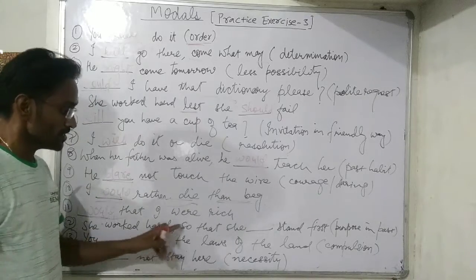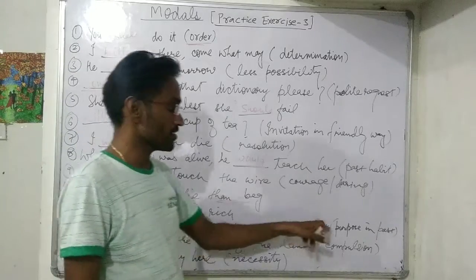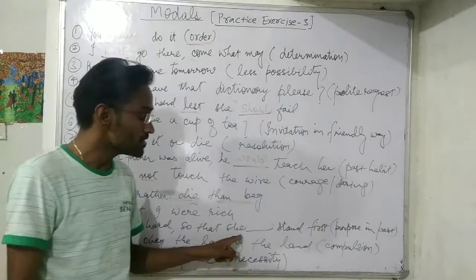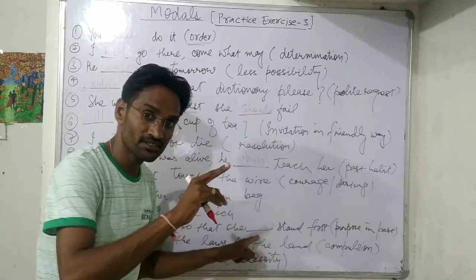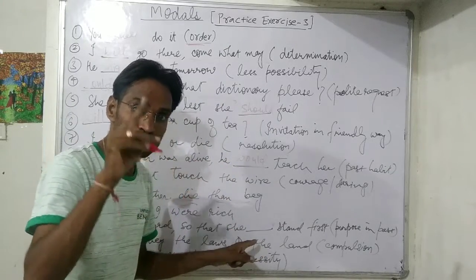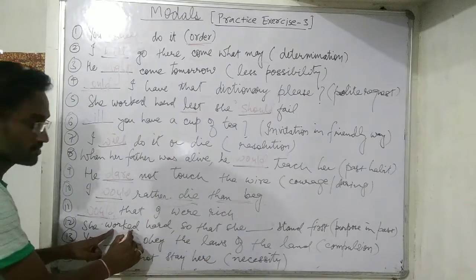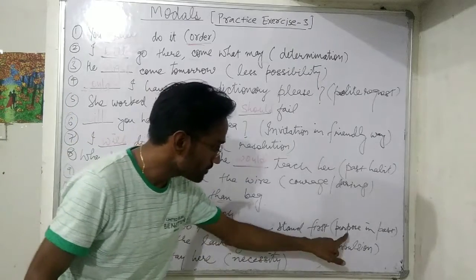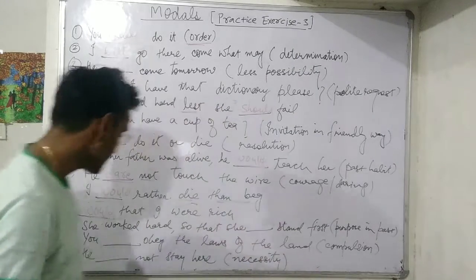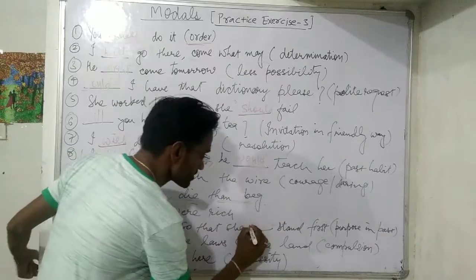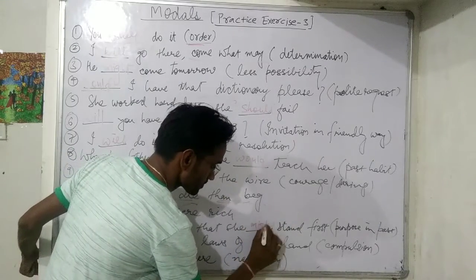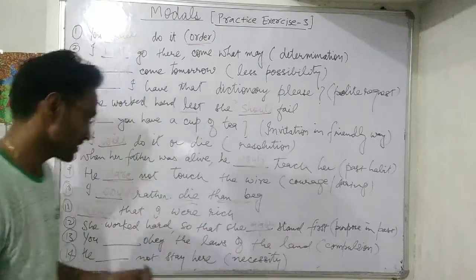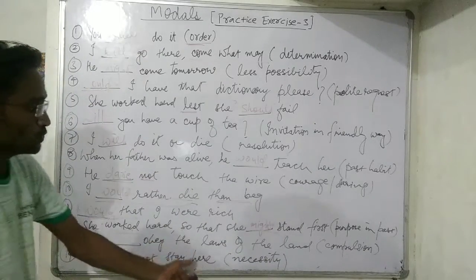Next: 'She worked hard so that she stand first.' She worked hard — that is past tense. For purpose, we use 'may,' but since it is past tense here, we use the past of 'may,' which is 'might.' So: 'She worked hard so that she might stand first' — it shows purpose in the past tense.